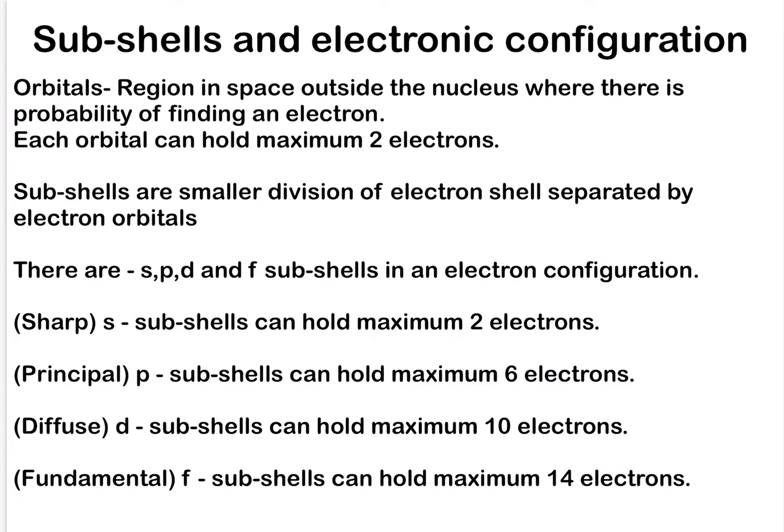Subshells are smaller divisions of an electron shell. They are S, P, D, and F subshells in an electron configuration. The Sharp or S subshell can hold a maximum of 2 electrons. The Principal or P subshell can hold a maximum of 6 electrons. The Diffuse or D subshell can hold a maximum of 10 electrons. The Fundamental or F subshell can hold a maximum of 14 electrons.